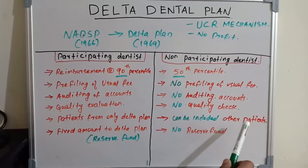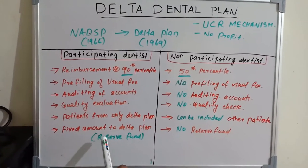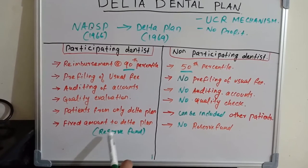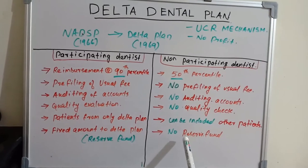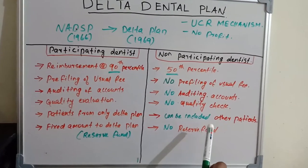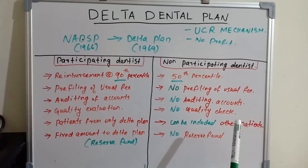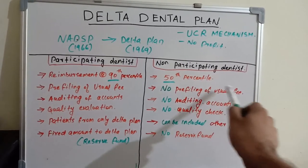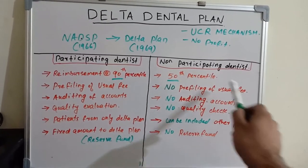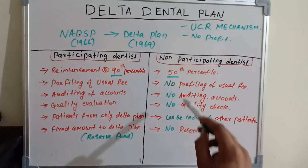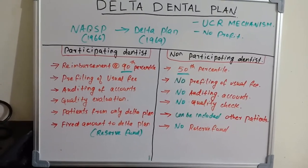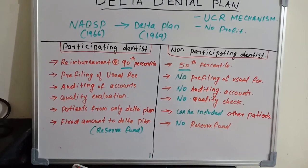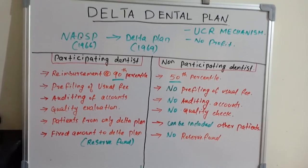The participating dentist is also obliged to contribute a fixed amount to the Delta Dental plan's reserve fund, whereas the non-participating dentist does not need to give such funds. So the non-participating dentist has many advantages for the dentist — not for the patient — but gets only 50th percentile payment, whereas the participating dentist gets 90th percentile payment.